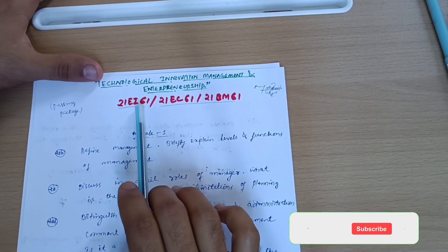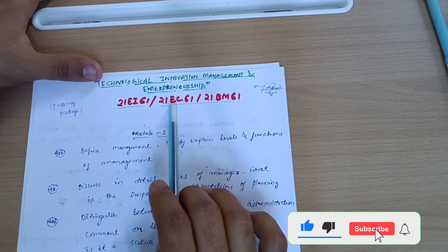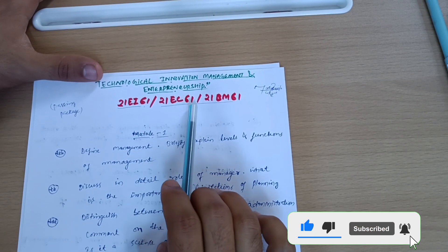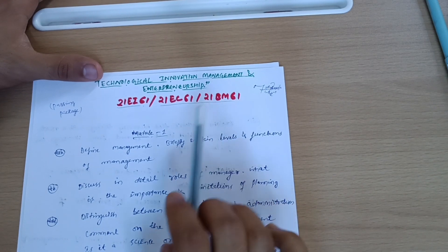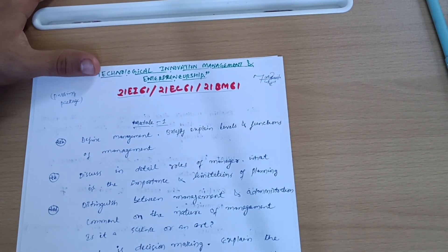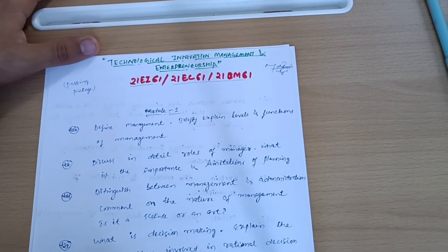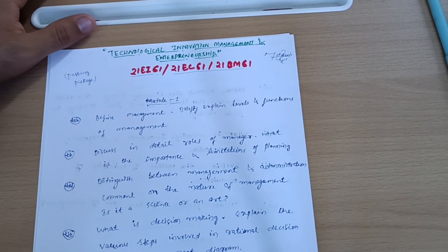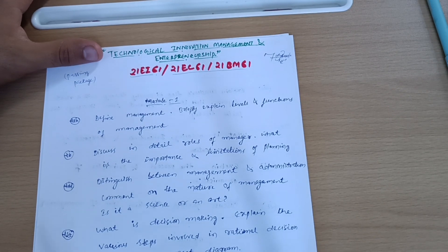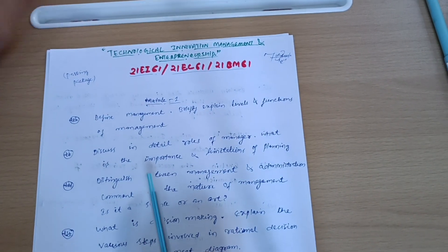This package is for three branches: EI branch with subject code 21EI61, EC branch with code 21EC61, and Biomedical branch with code 21BM61. This is not only a passing package but a scoring package — you can easily score more than 50 marks if you cover this portion. Only two days are enough to cover the subject. You should try to write down the key points of these questions.